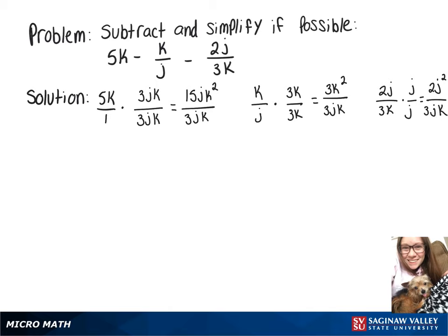Now we can take our original problem which was 5k minus k over j minus 2j over 3k and rewrite it as 15jk squared over 3jk.